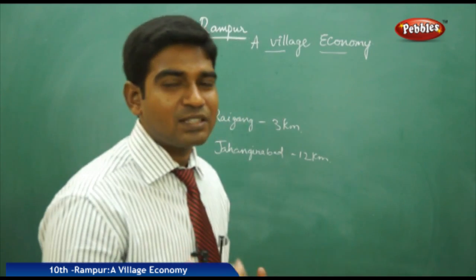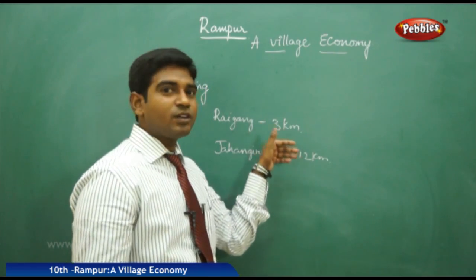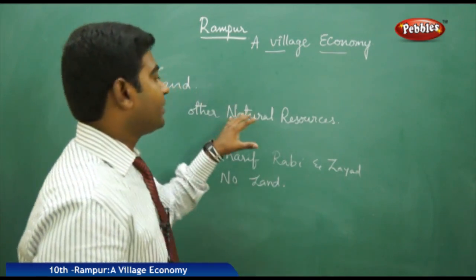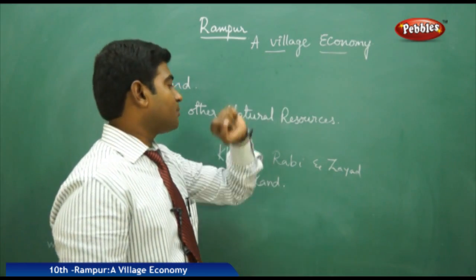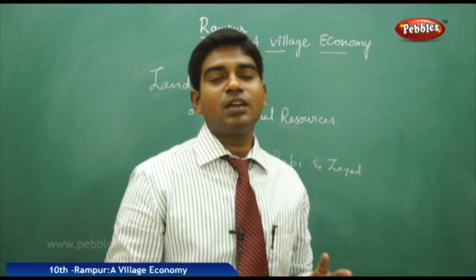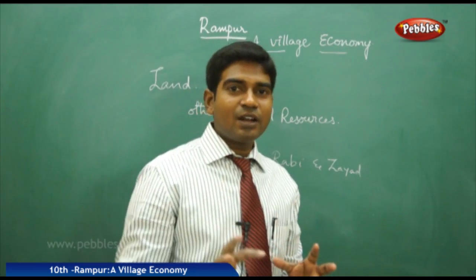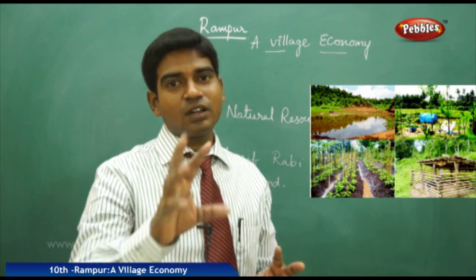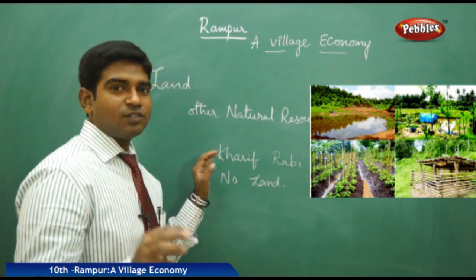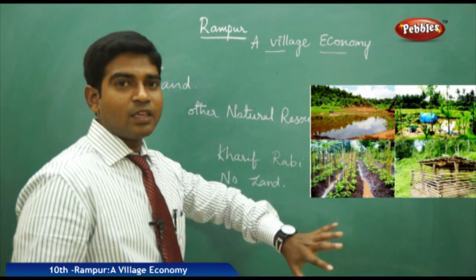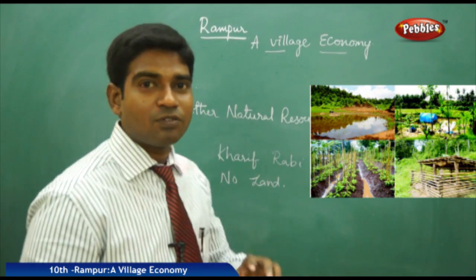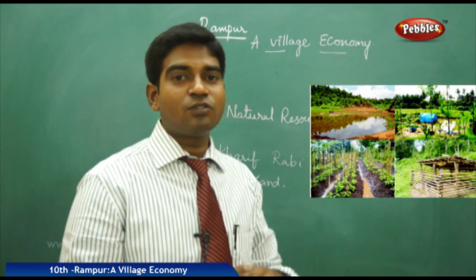What is Rampur's basic structure, and how did Rampur become well advanced in farming? The land and other natural resources available in Rampur village make it an ideal village. As mentioned, the name has been changed but it has all the ideal features required for a village to develop. There are three seasons — Kharif, Rabi, and Zaid — and in all three seasons there is water supply connectivity for growing crops.